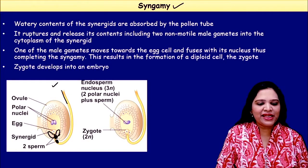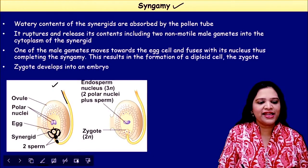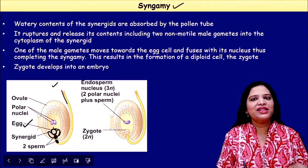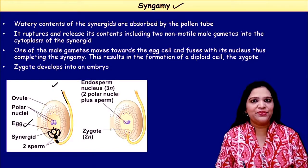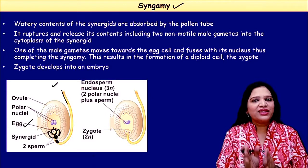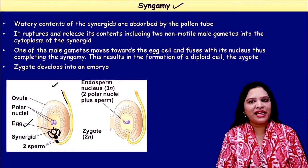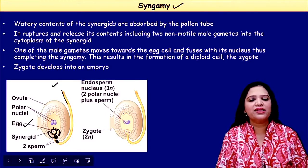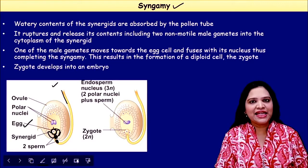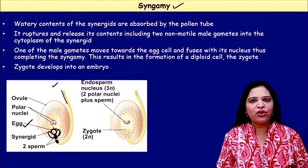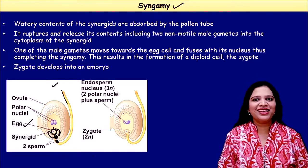The first male gamete goes and fuses with the egg cell. This is called syngamy — fusion of a male gamete with the egg cell — and it results in the formation of a zygote which is 2n in structure.